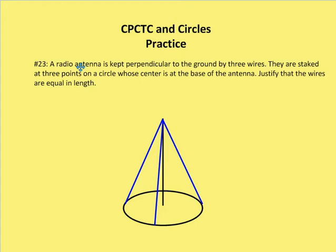a radio antenna is kept perpendicular to the ground by three wires. Okay, so let's draw this out. What we know is that the radio antenna is kept perpendicular to the ground, so we're going to draw radii here, and then we're going to draw a little box here that says that this is a right angle.